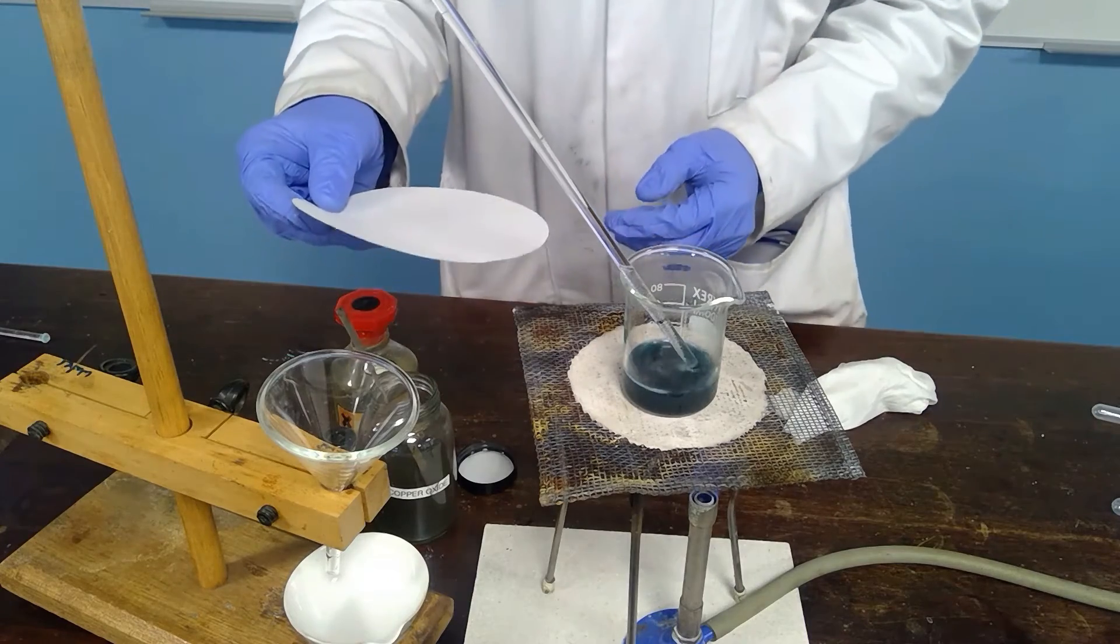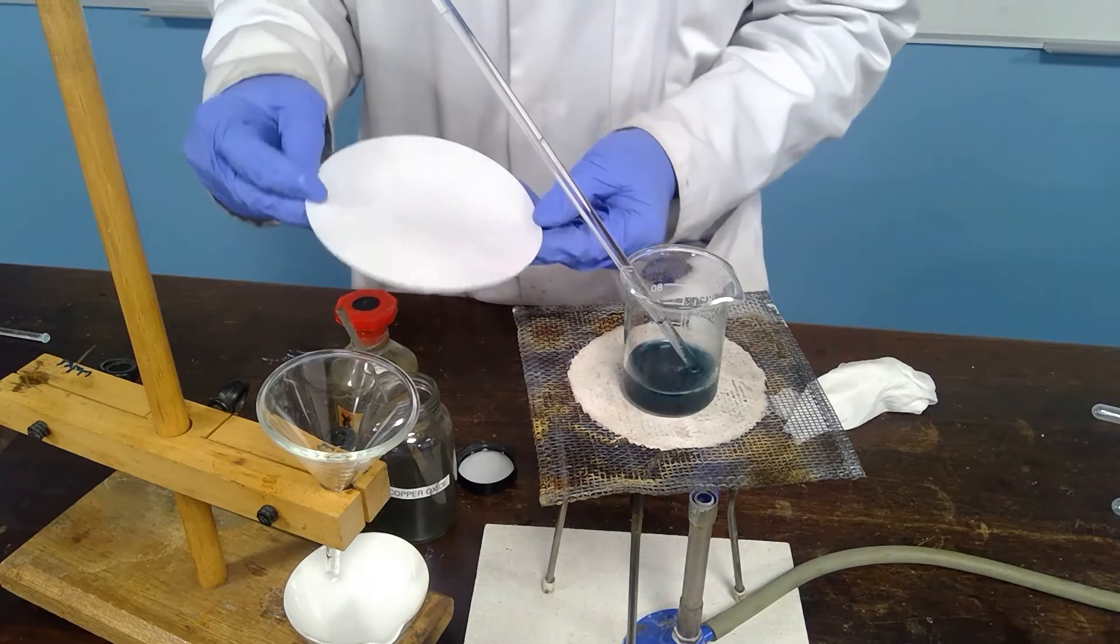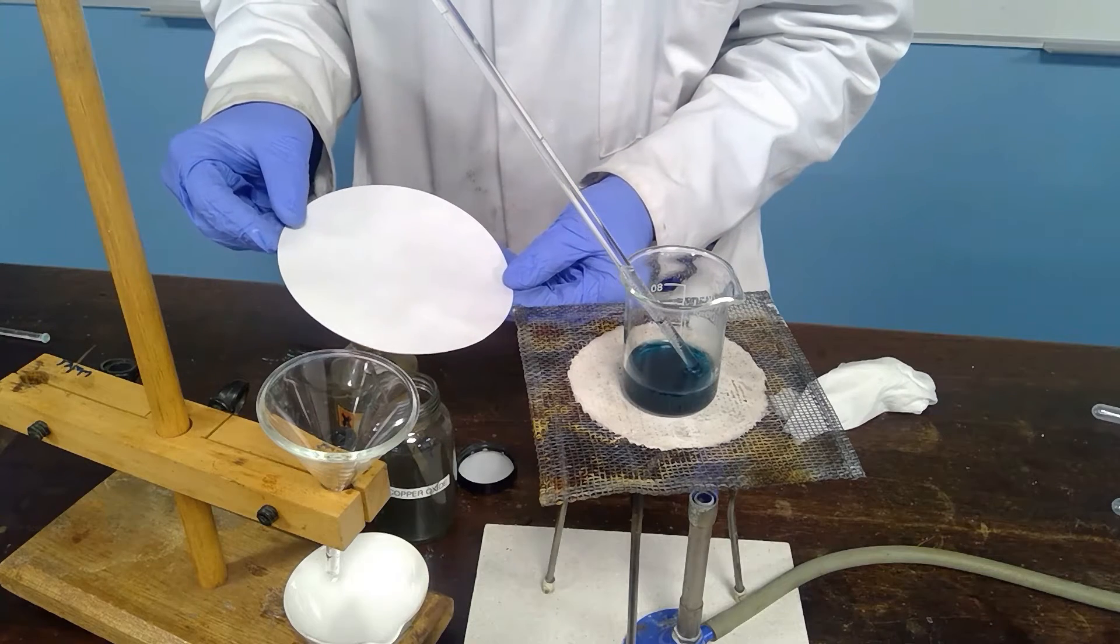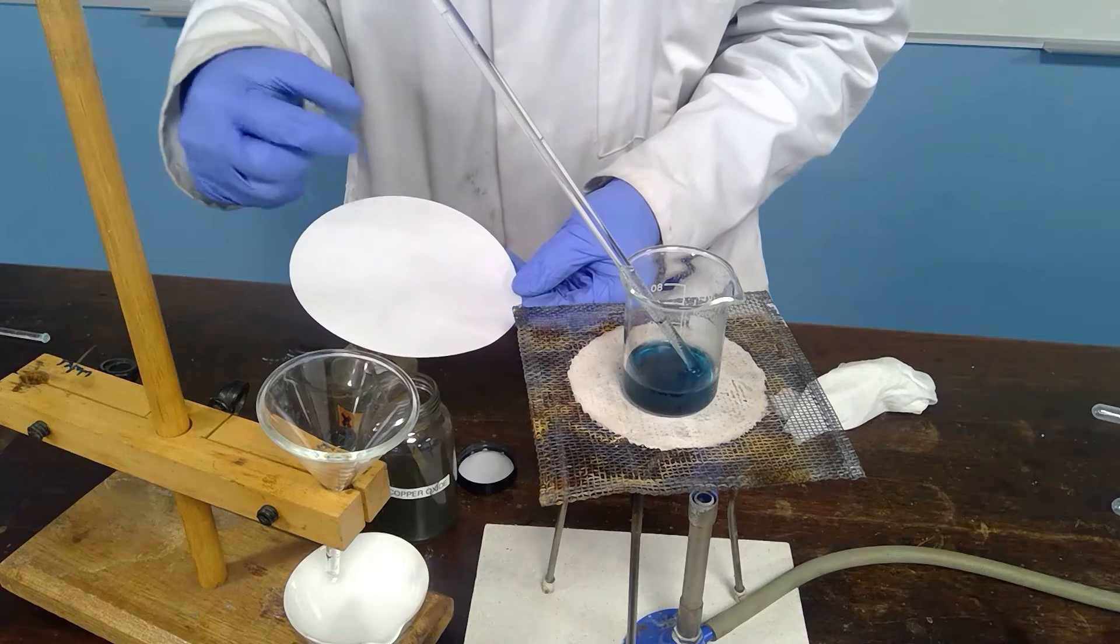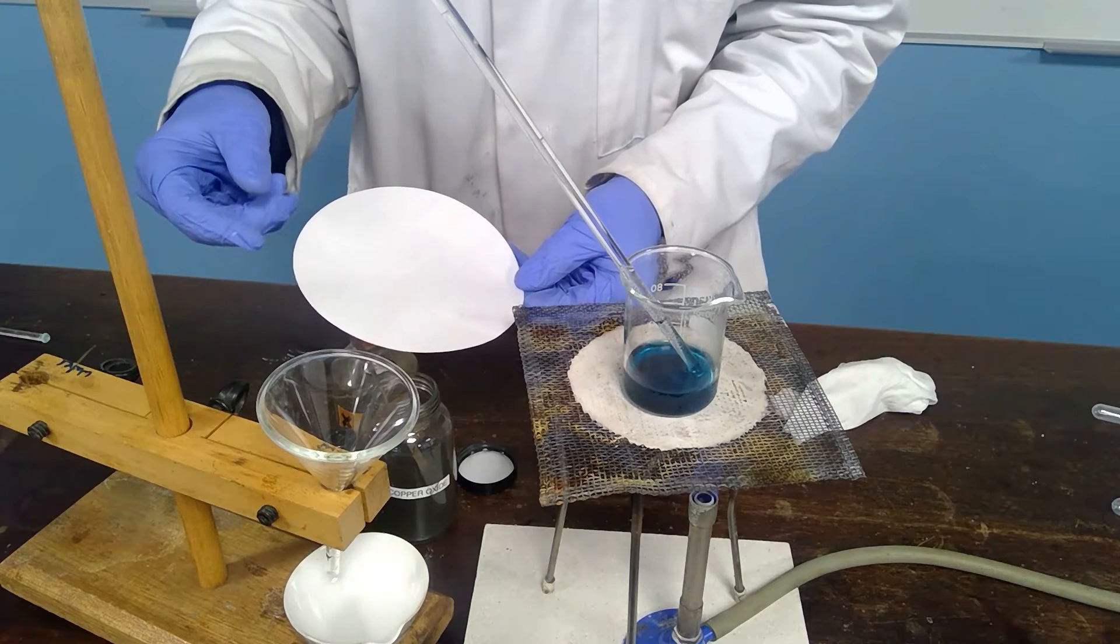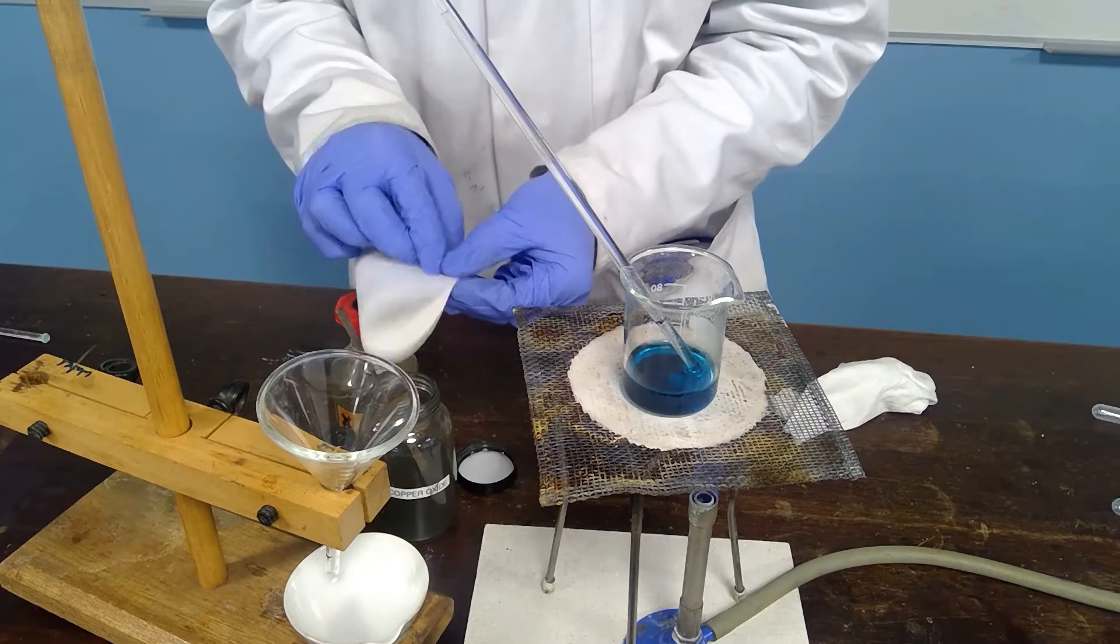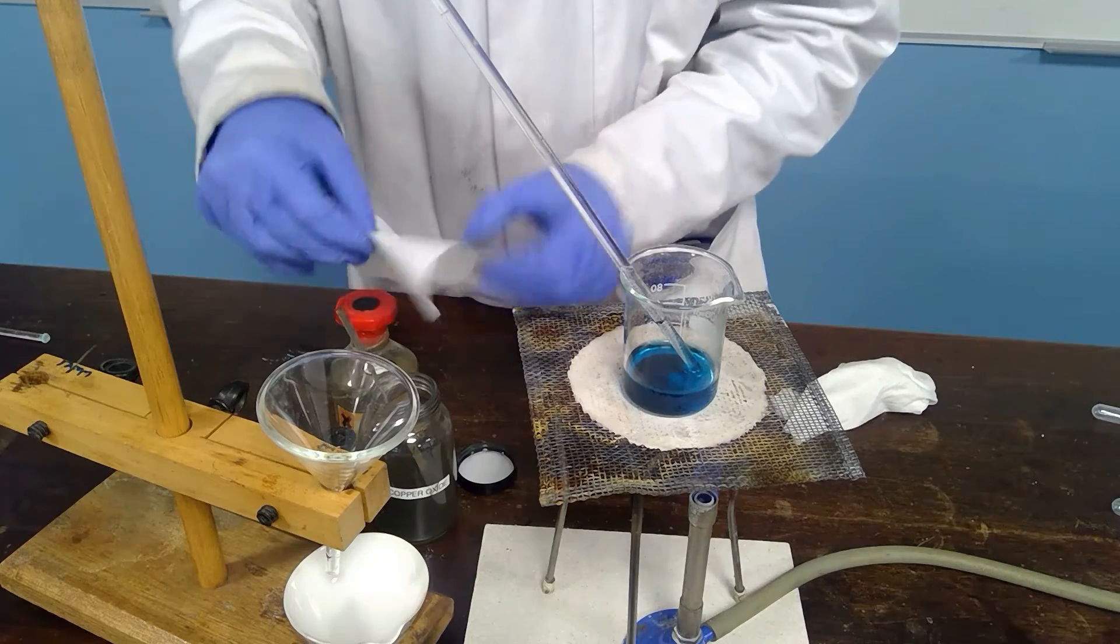We're then going to filter. We're going to use fluted filter paper. If we were to set this paper up in the traditional way of just folding twice and opening up with three layers and one layer it is not as efficient as if we had only one layer. So to achieve this we make fluted filter paper.